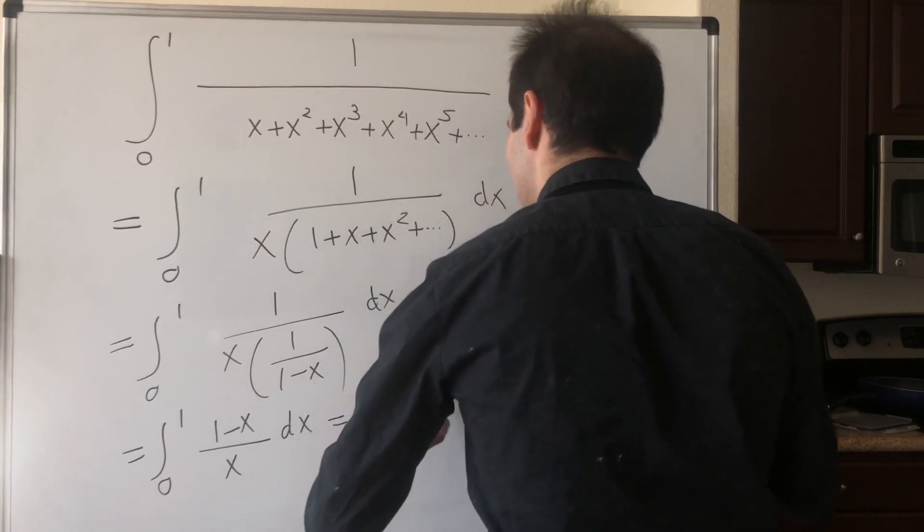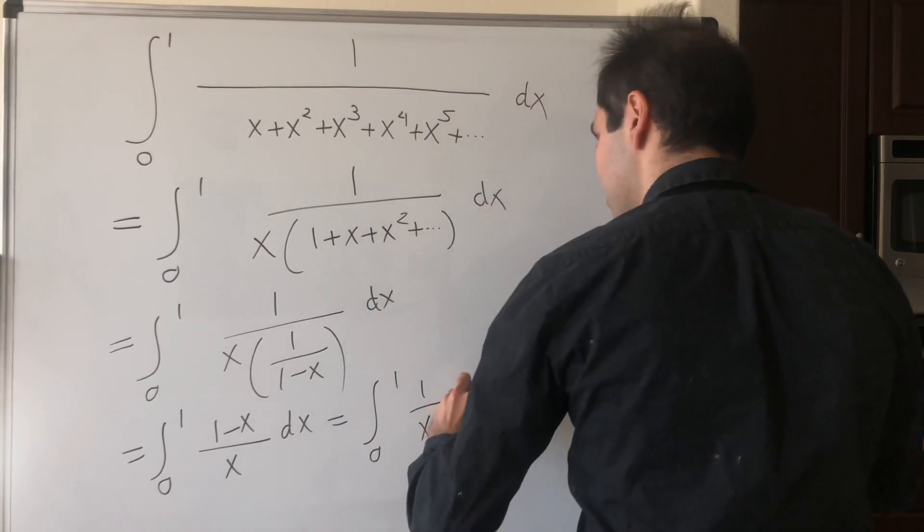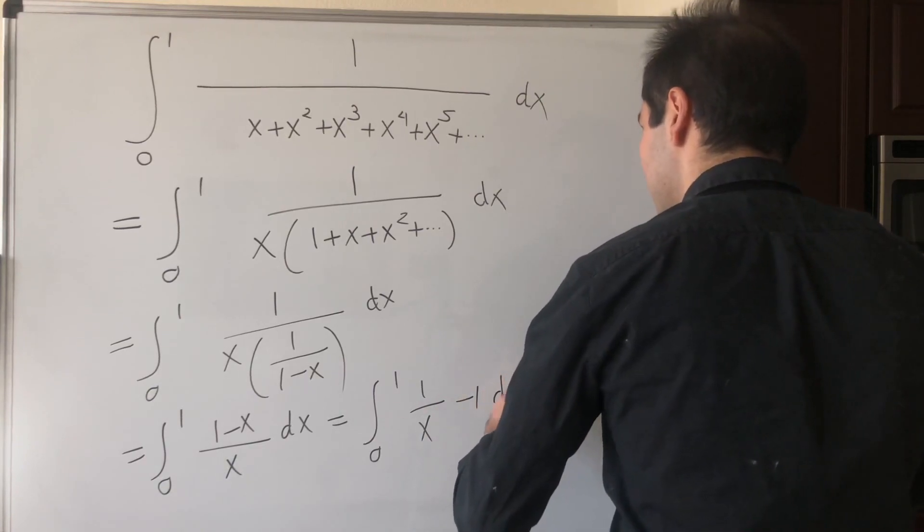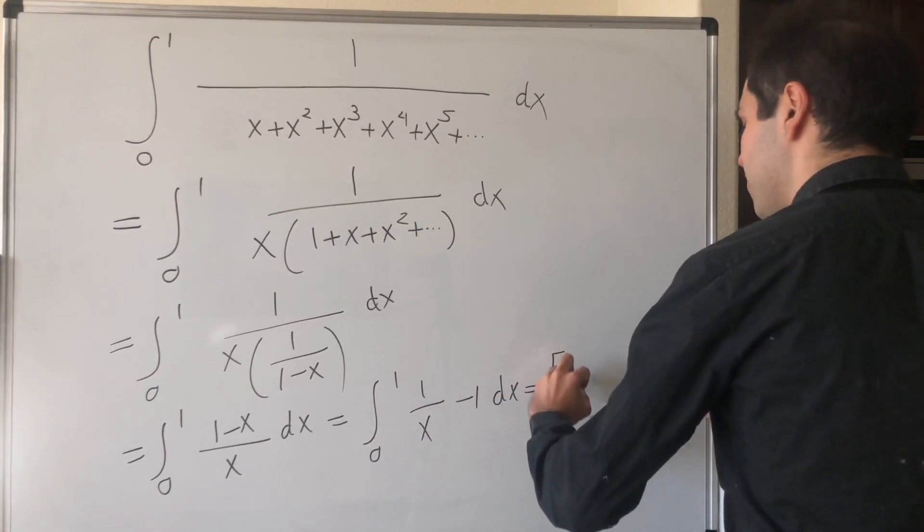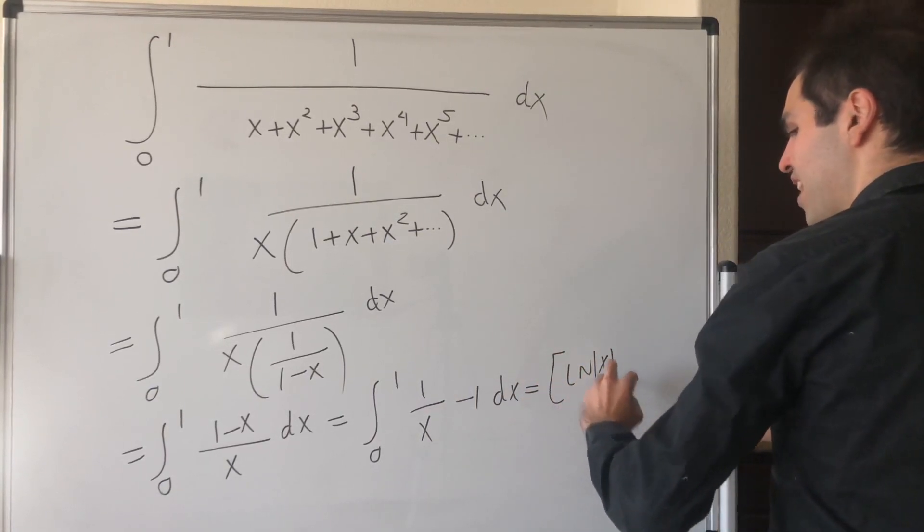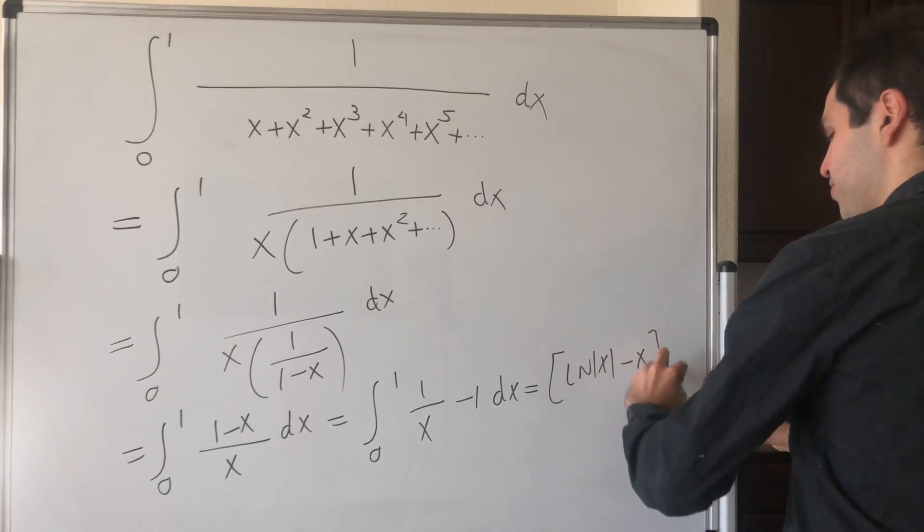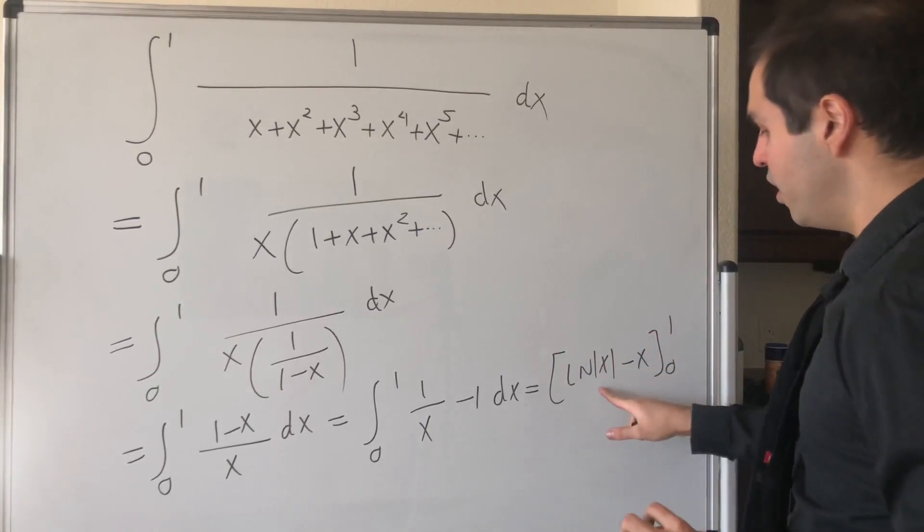Which is the integral from 0 to 1 of 1 over x minus 1 dx, with antiderivative ln of absolute value of x minus x from 0 to 1.